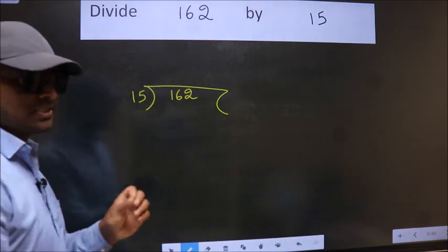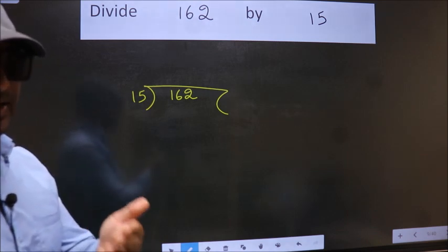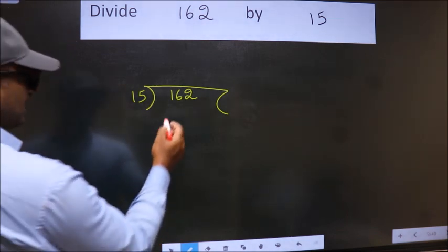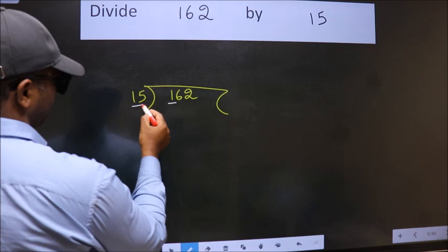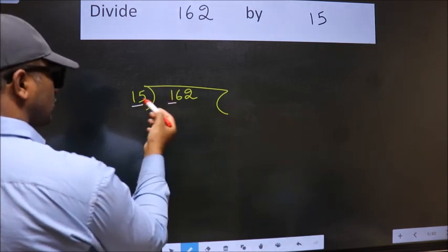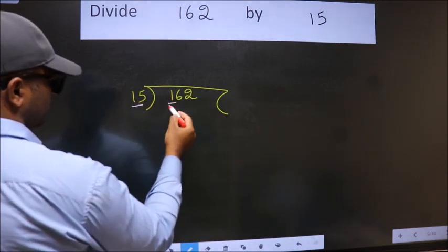This is your step one. Next, here we have 1, here 15. 1 is smaller than 15, so we should take two numbers, 16.